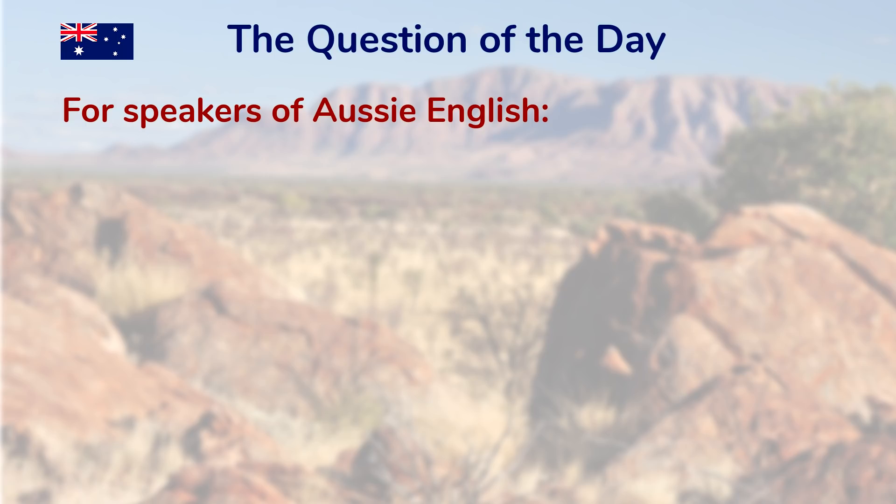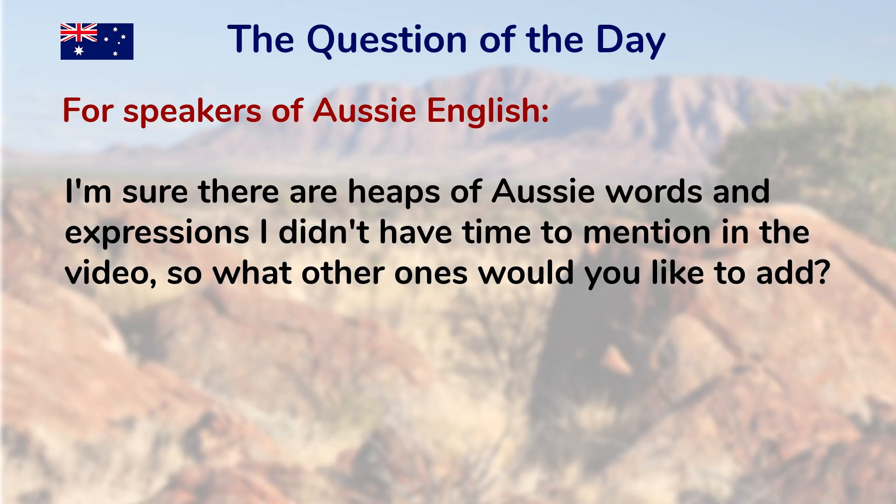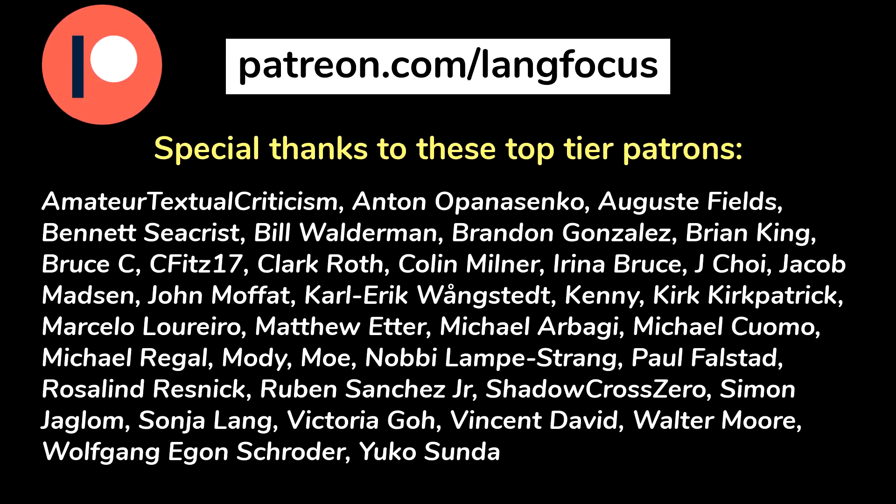Australian English is largely the same as other varieties of English, but with its own accents, vocabulary, and attitude that reflect the laid-back nature of Aussies — endearing and friendly are two words that come to mind. One final feature is Aussies' extremely liberal use of a certain word, though we'll move on to the question of the day: for speakers of Aussie English, what other words and expressions weren't mentioned? Write them in the comments. Thanks to Patreon patrons — becoming a member gives benefits like early releases, ad-free videos, and a patrons-only community. Check out patreon.com/langfocus. Thank you for watching, and have a good one.